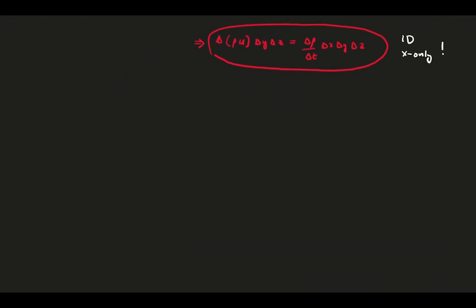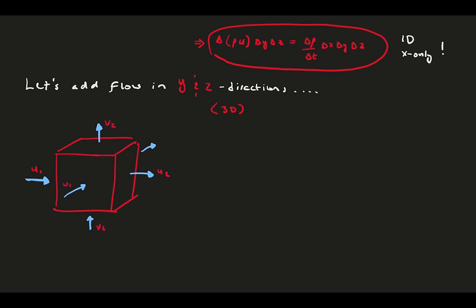But what if we have more than one dimension? Well, we can build upon this simple case by adding flow in the y and z directions, making it fully three-dimensional. We draw our cube again, but this time instead of capping two directions with green walls, we're going to add other flows through v and w velocities.